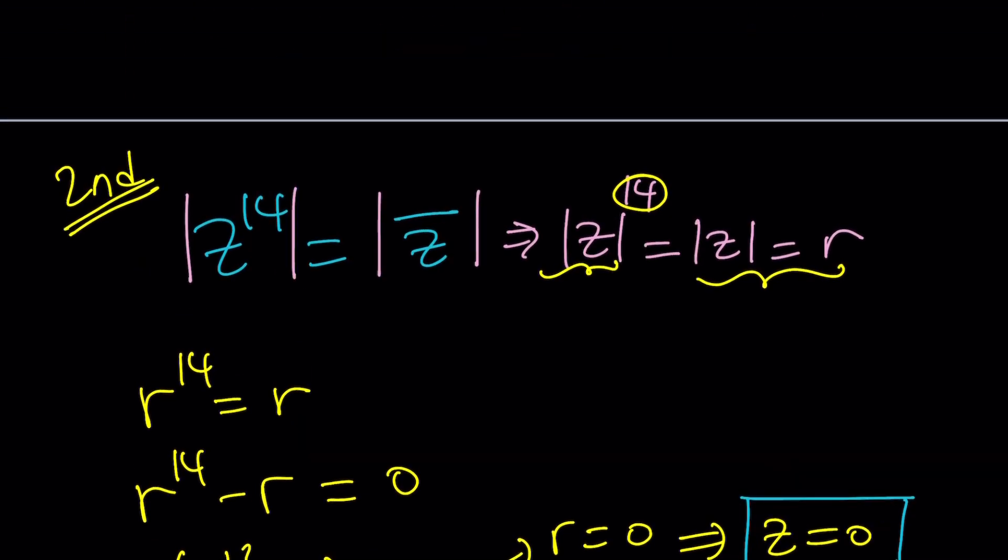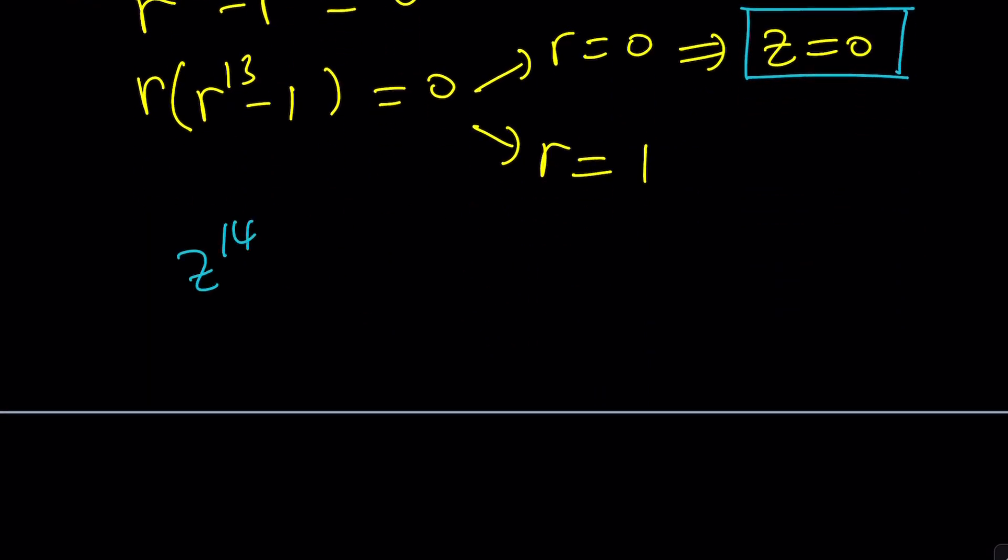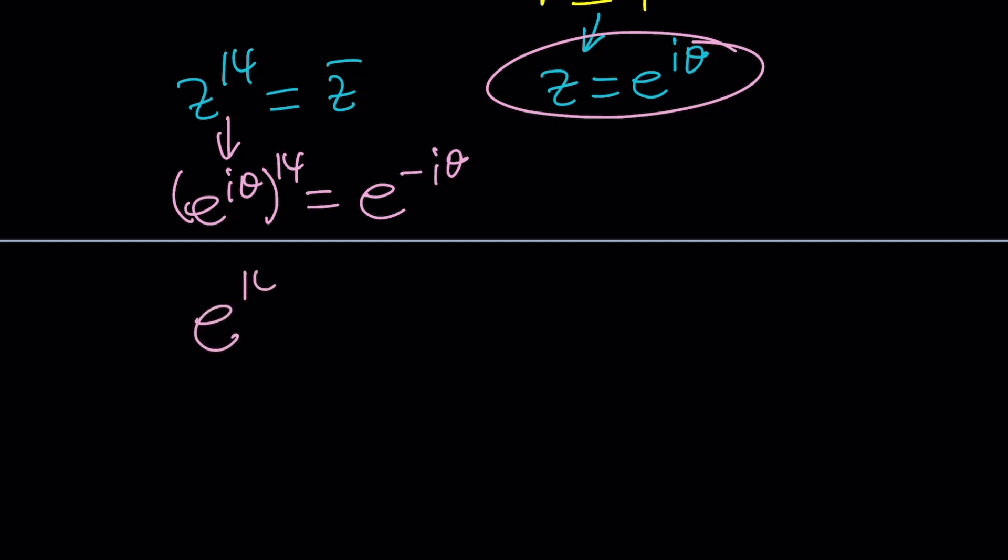What happens with R equals 1? Well, it just gives us R equals 1, so we can basically just replace Z with E to the I theta, instead of R E to the I theta. So, Z can be written as E to the I theta, which is nice, because it has a modulus of 1. If you replace Z with that, E to the I theta to the power 14 equals E to the negative I theta, which is the conjugate. And from here, you get E to the 14 I theta equals E to the negative I theta.